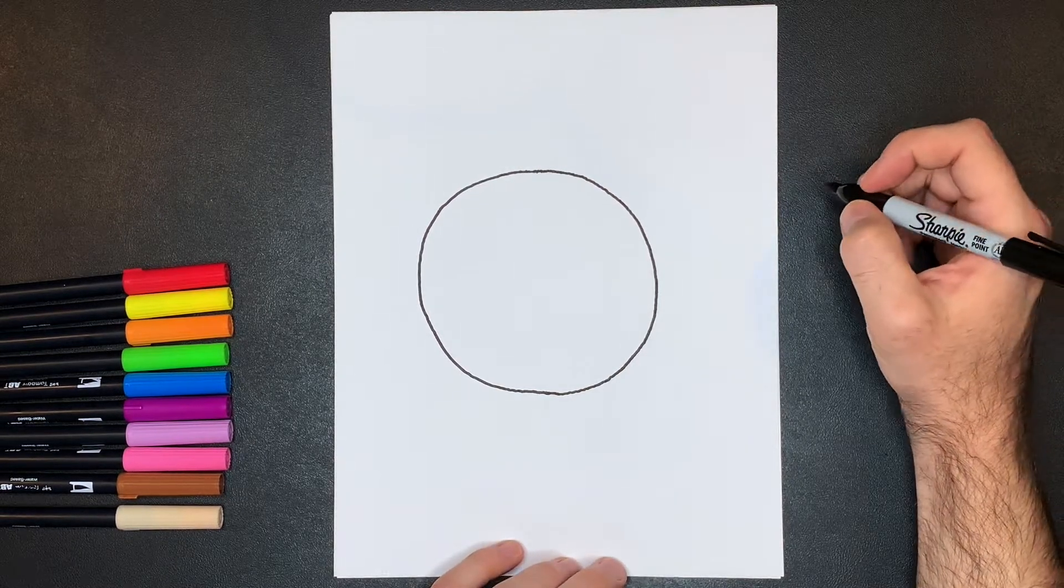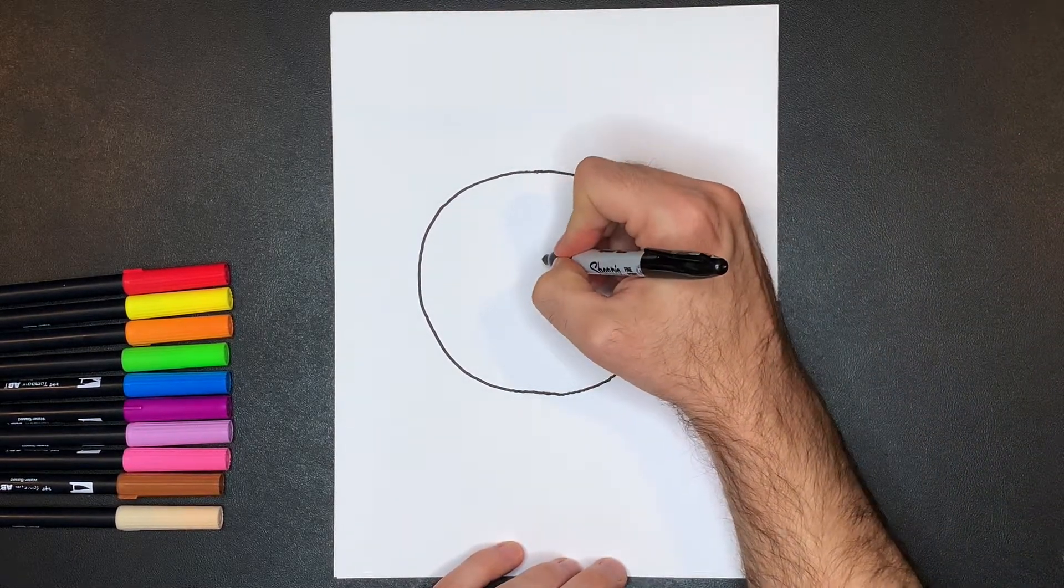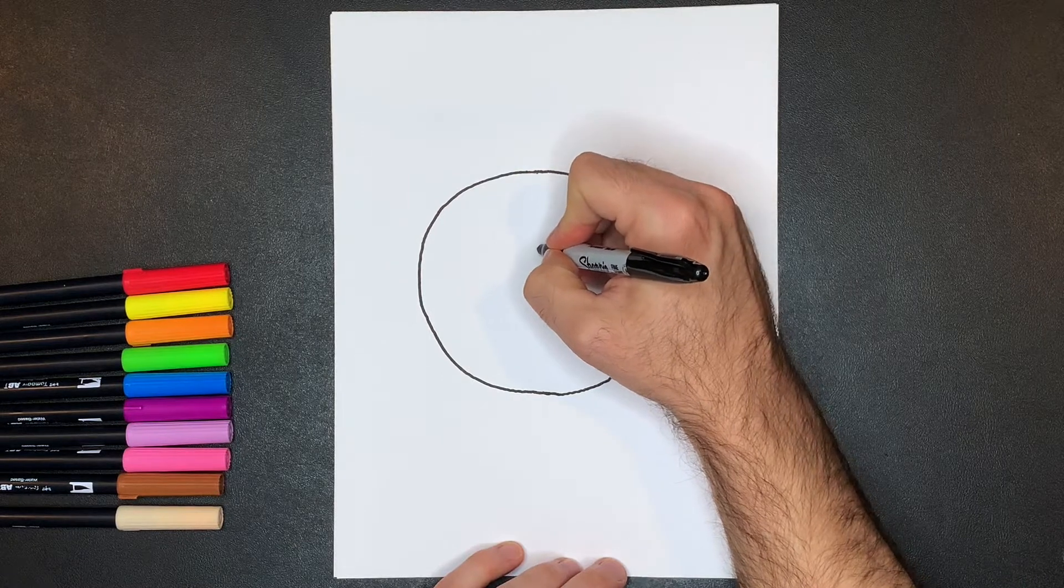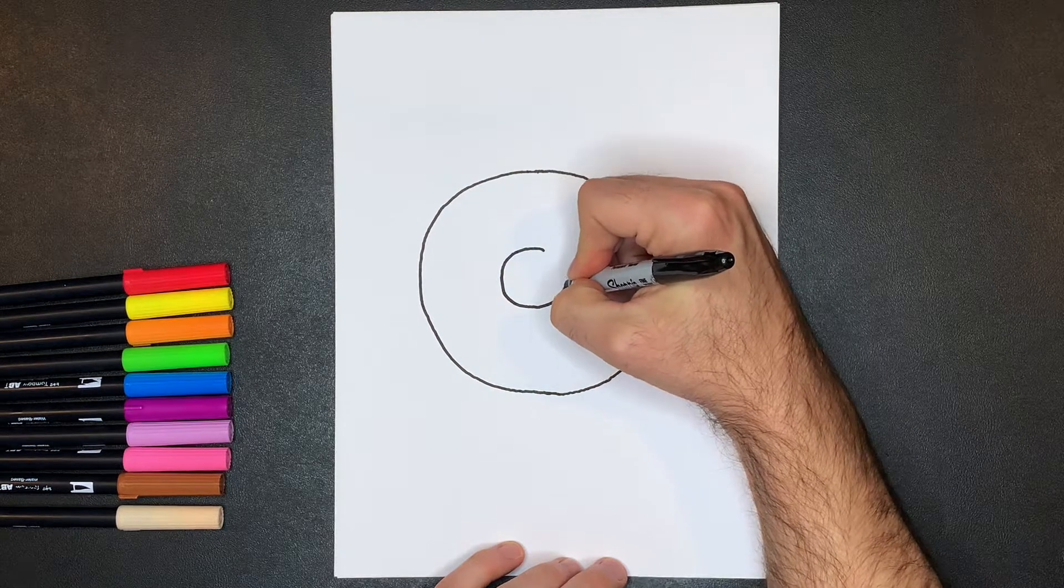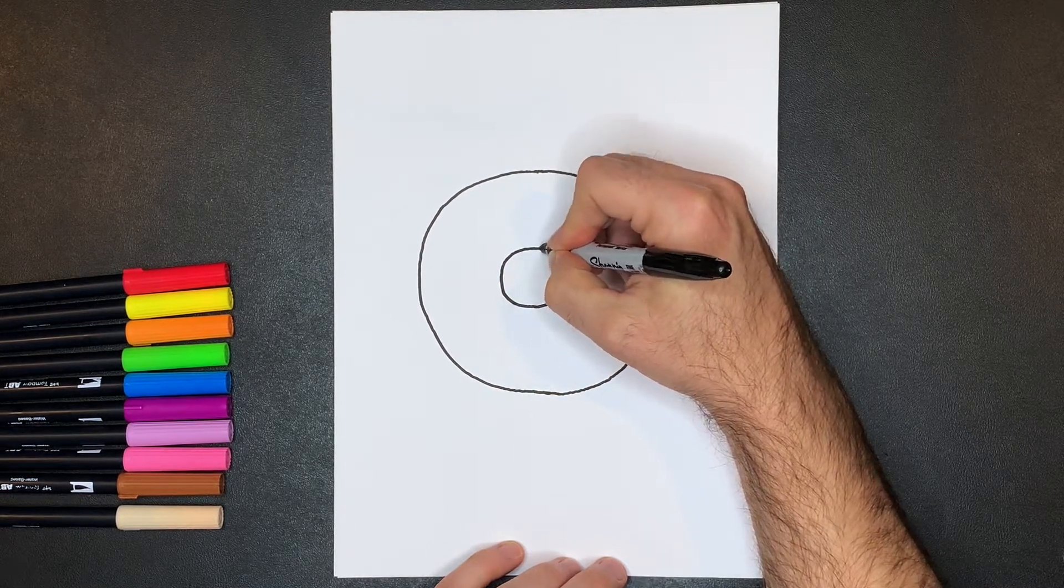Okay, next we're going to draw the donut hole, which is another circle. We're going to start right about here, just draw that circle out and around, and right in there.